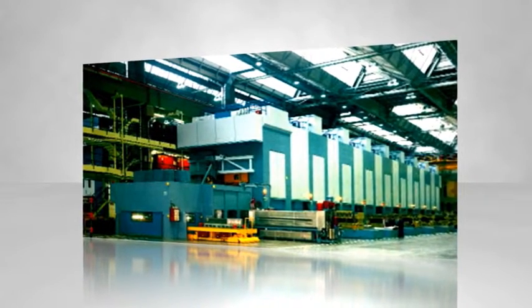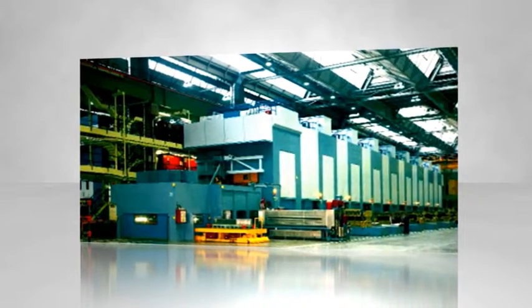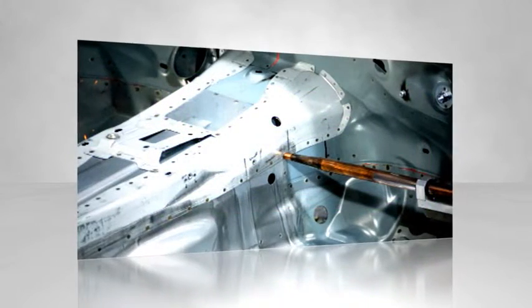The stamping of sandwich steel sheets requires traditional equipment and formability behavior is similar to monolithic steel. Joining can be done using resistance spot welding.